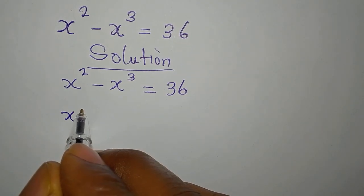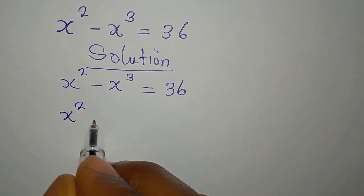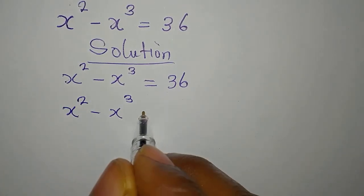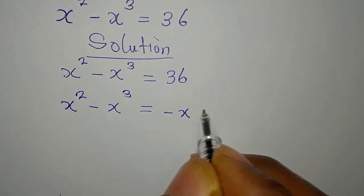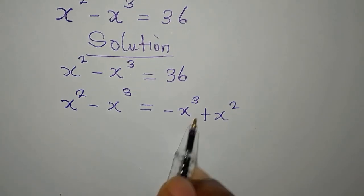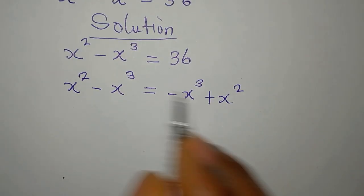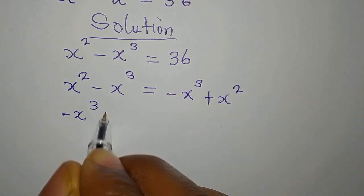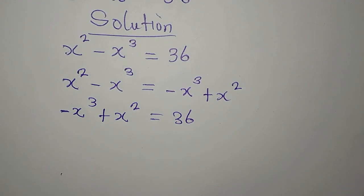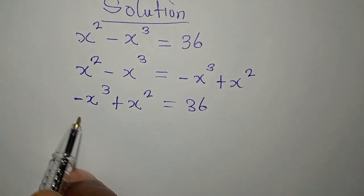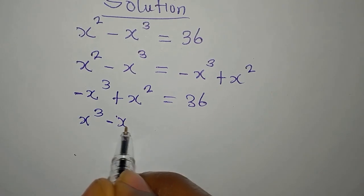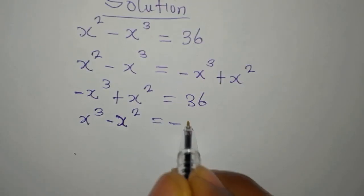So we have x to the power of 2 minus x to the power of 3. This right here is the same thing as negative x to the power of 3 plus x to the power of 2. These are the same, so I can rewrite this as negative x to the power of 3 plus x squared equals 36. Then we multiply everything by the negative, so we have x to the power of 3 minus x to the power of 2 equals negative 36.